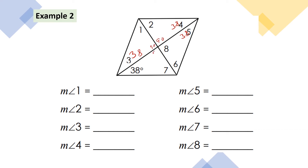The four center angles are 90 degrees because the diagonals are perpendicular. To find angles 1, 2, 7, and 6, I use the triangle angle sum theorem — there are 180 degrees in a triangle. So I subtract: 180 minus 90 minus 38, which equals 52.